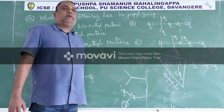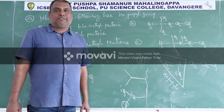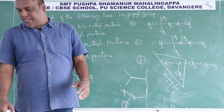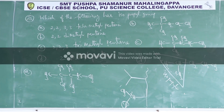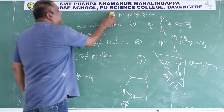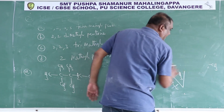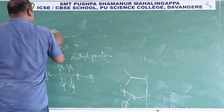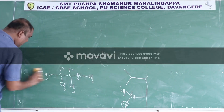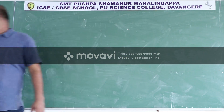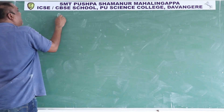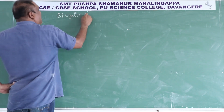After these questions, we are left with nomenclature of bicyclic compounds and nomenclature of spiro compounds, which will be continued. Dear students, coming to the nomenclature of bicyclic compounds.